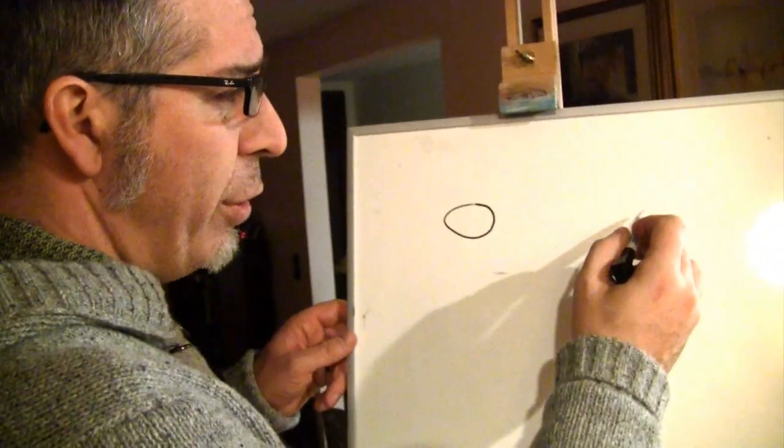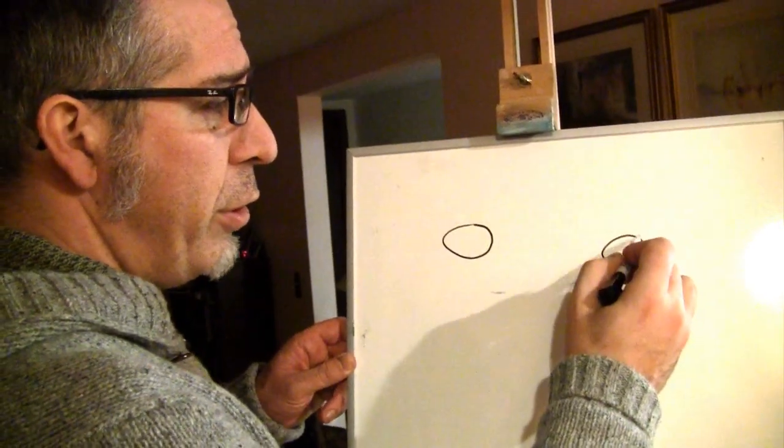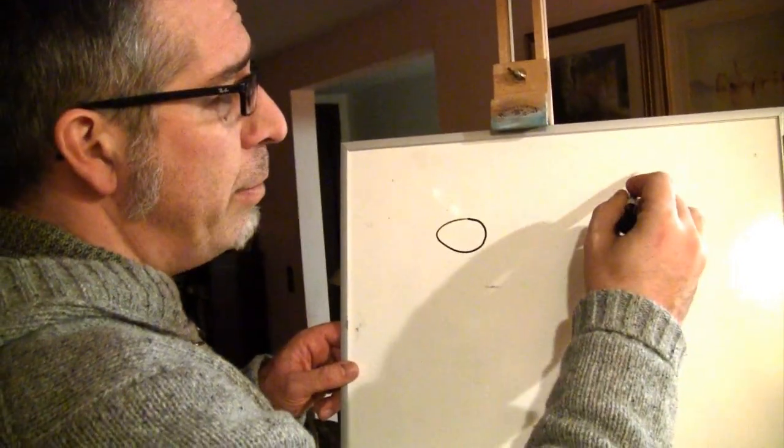Next, the half note. Similar to the whole note, in that it's a circle, but with a stem.